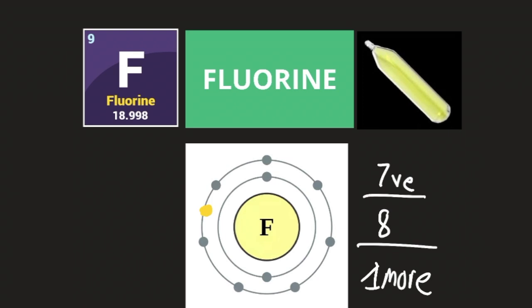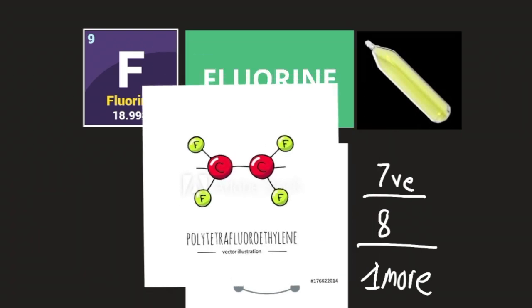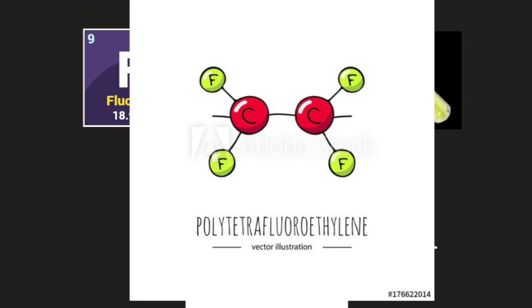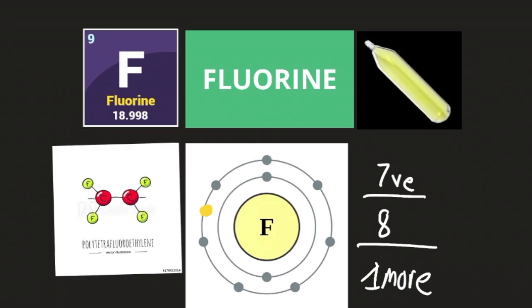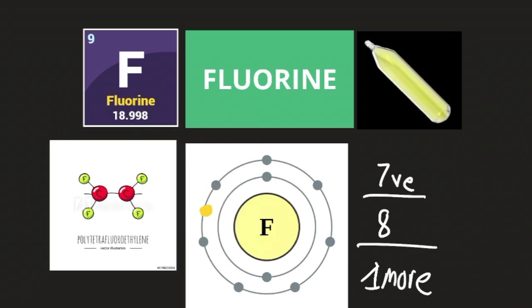This is why fluorine is naturally found in rocks and combined with other elements — it's not found in its natural pure state. Here is an example: polytetrafluoroethylene, which is an example of a bond between carbon and fluorine. Carbon forms bonds with almost anything, so it makes sense that it would eventually bond with the most reactive element on the periodic table. There are many more examples; this is just an introduction to how fluorine bonds and why it's so reactive.